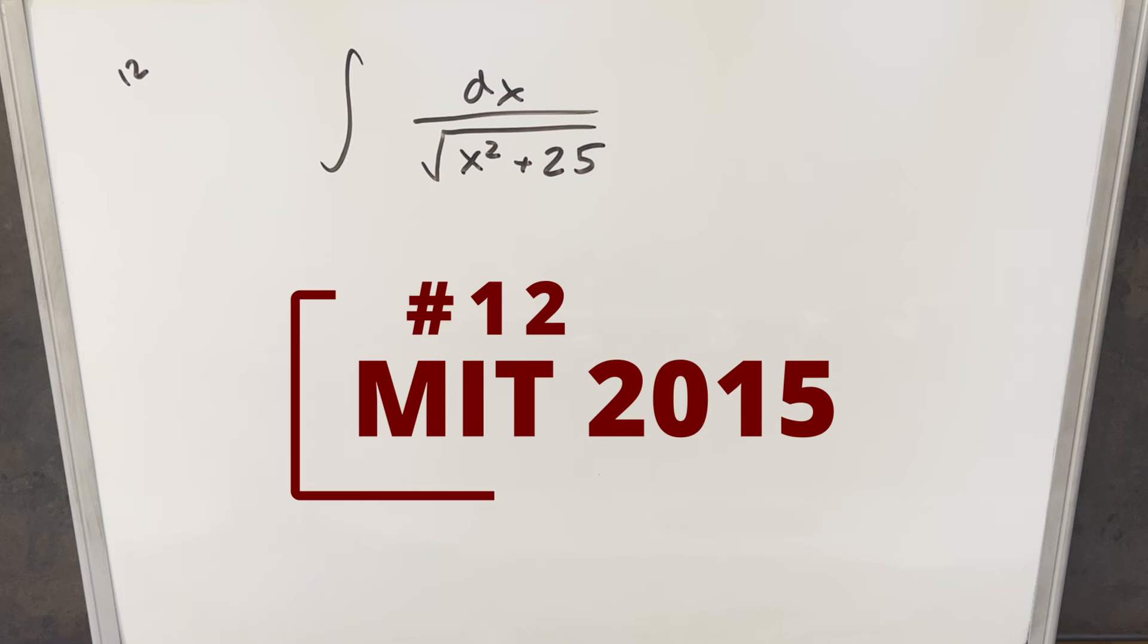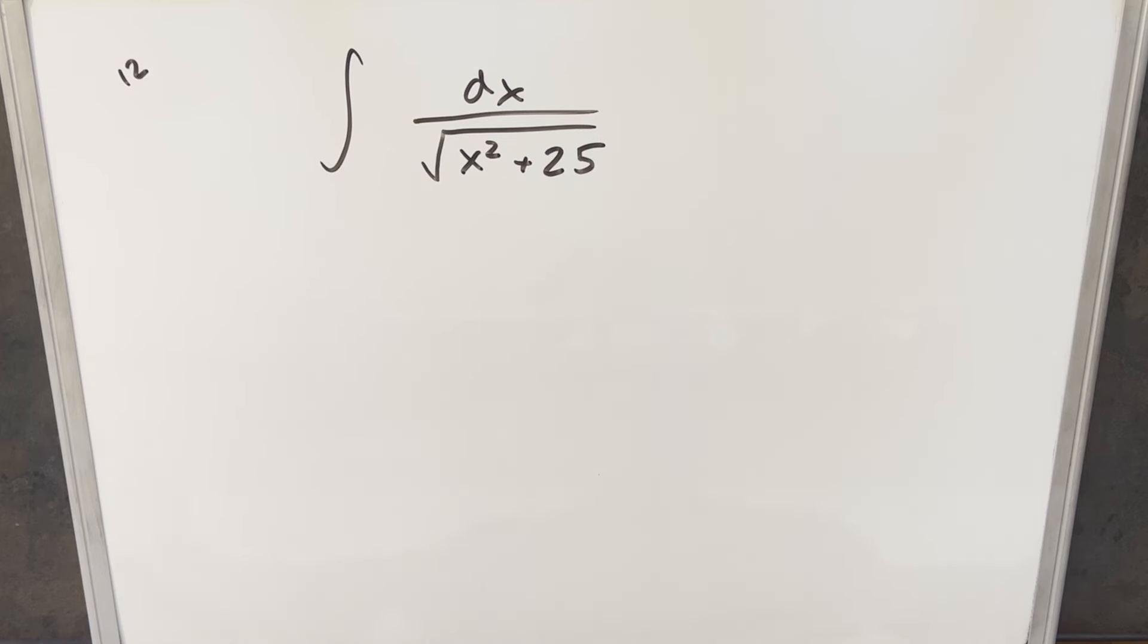We have the integral of 1 over square root of x squared plus 25 dx. You may notice I've already did this problem recently doing a trig substitution. The reason I'm doing it again, I want to do it today using a hyperbolic trig substitution.